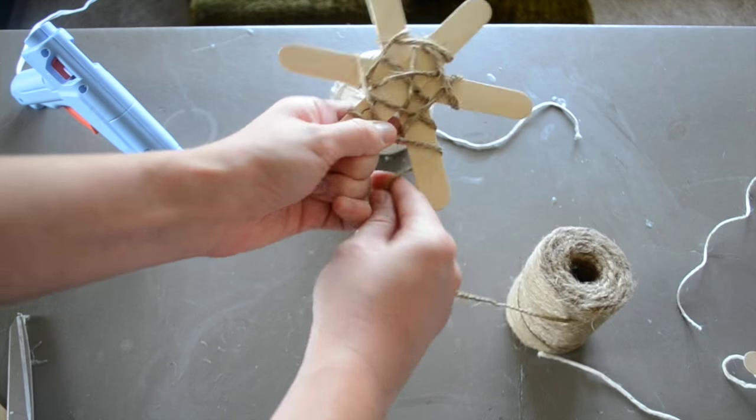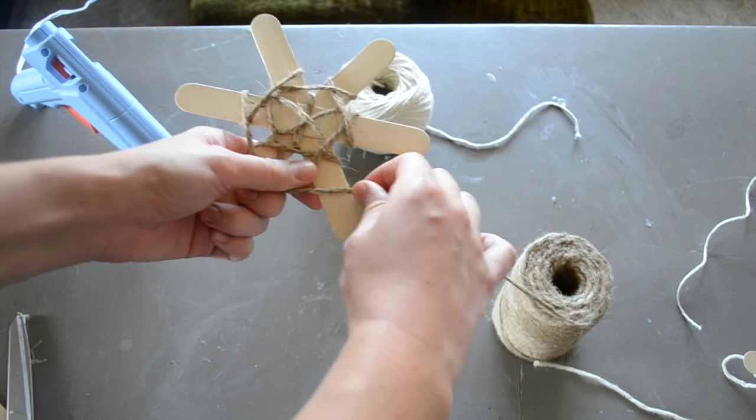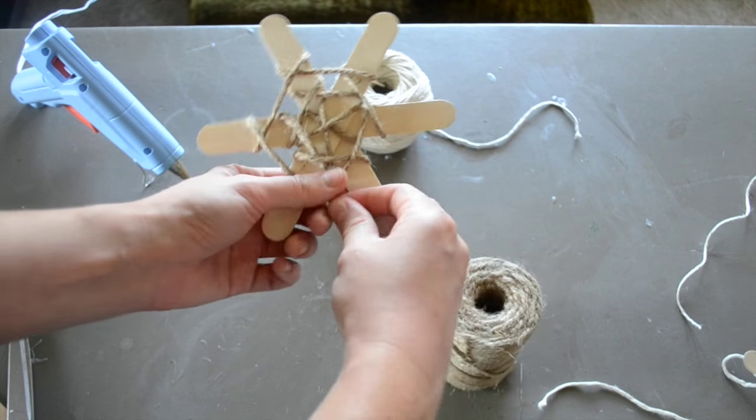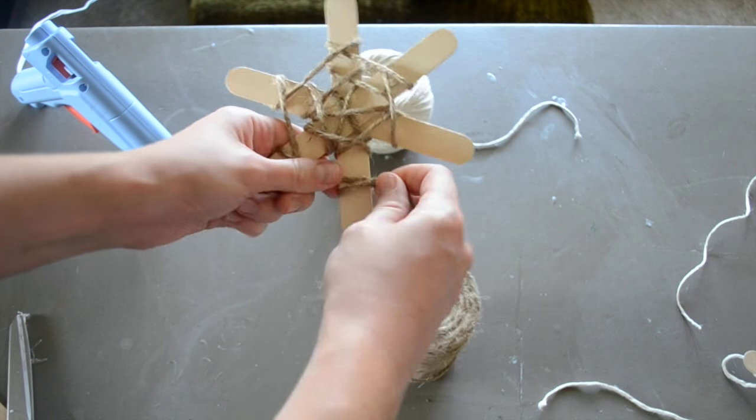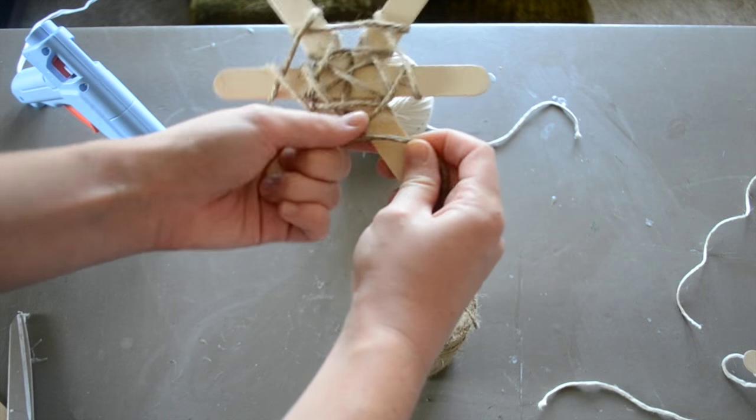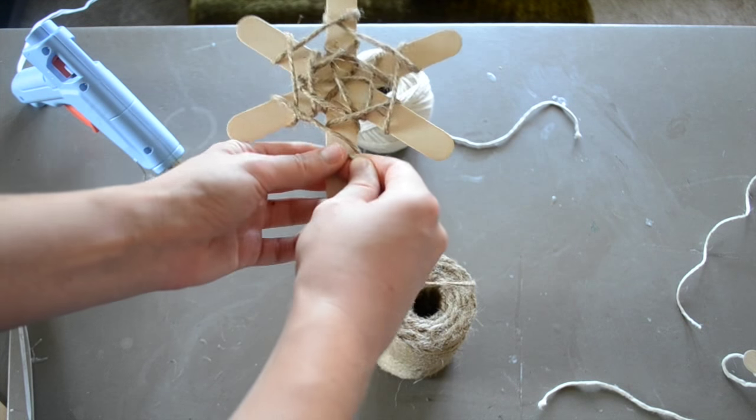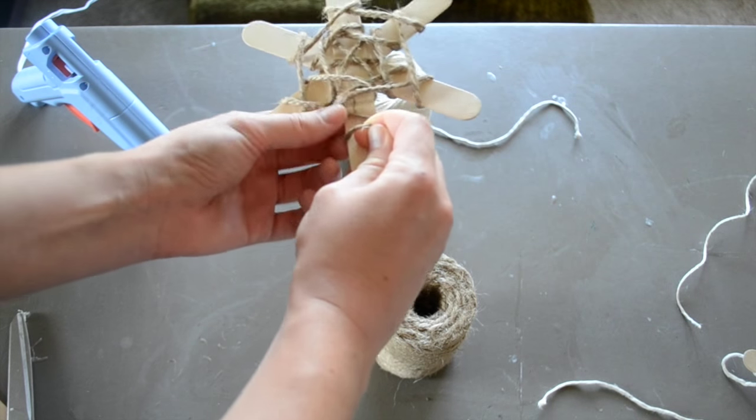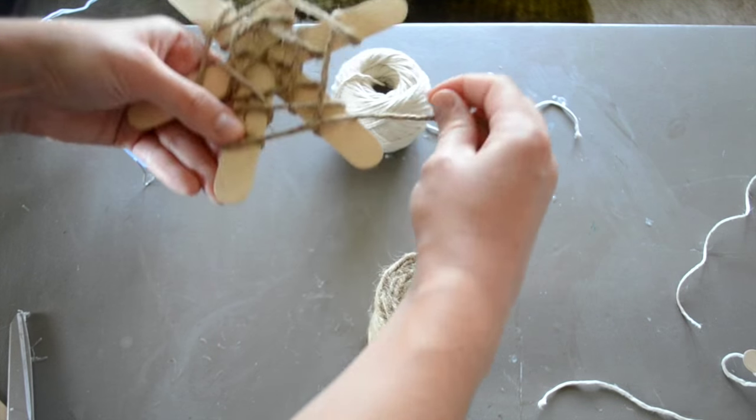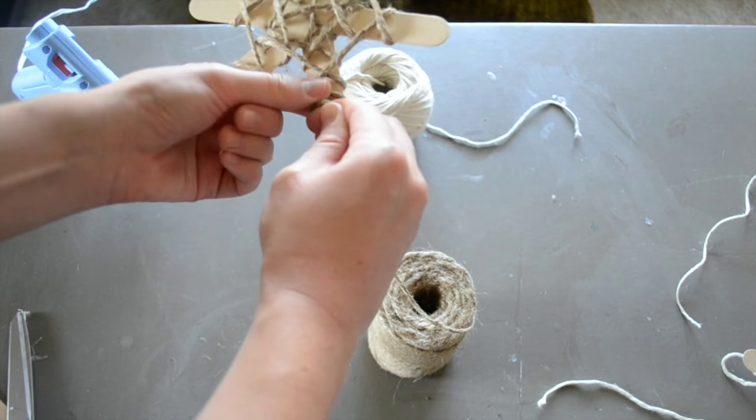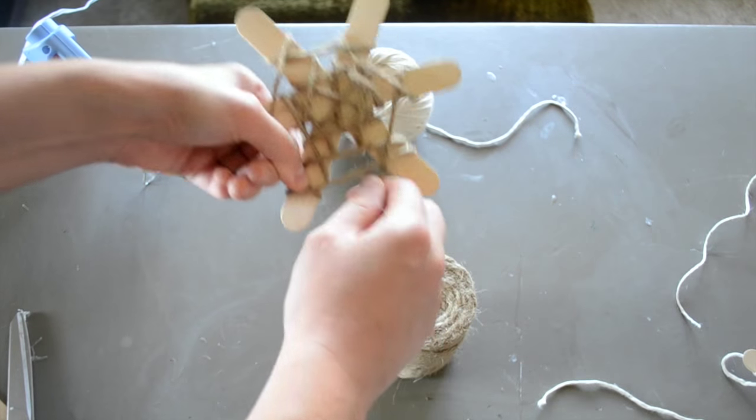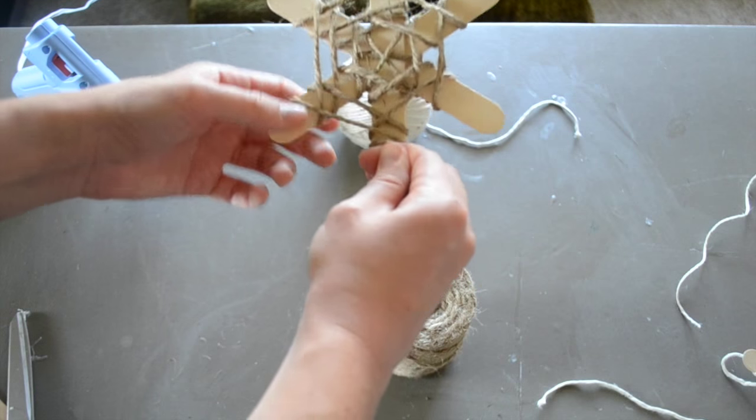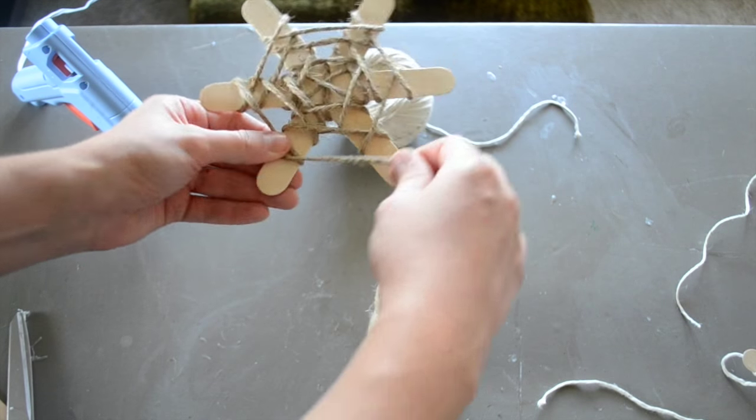Once you've completed the first section, move out about a half inch and continue wrapping around. You're doing that crisscross over each popsicle stick, pulling it nice and tight so they stay in place. Then moving out another half inch. You continue wrapping and moving further out until the entire surface has been covered.